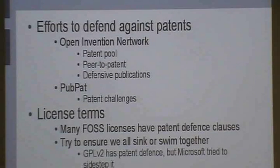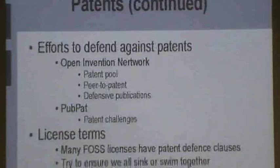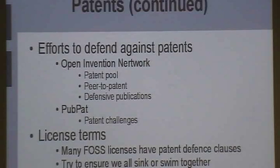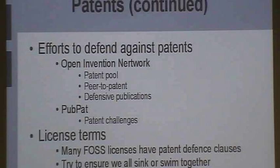There are efforts to defend against patents in free software. The Open Invention Network has created a patent pool — companies pledge their patents into the pool, and these patents are available to anyone producing free software. If any OIN member gets sued for patent infringement, the OIN can use that entire patent portfolio to counter-sue. So if a company sues a member over one patent, the OIN can respond: 'You're infringing 200 of our patents.' Most of these things tend to happen behind closed doors.